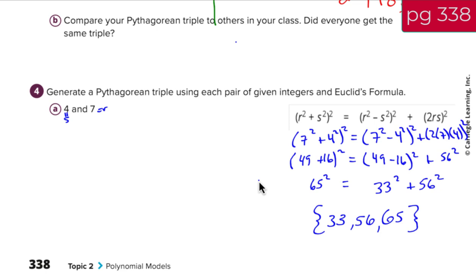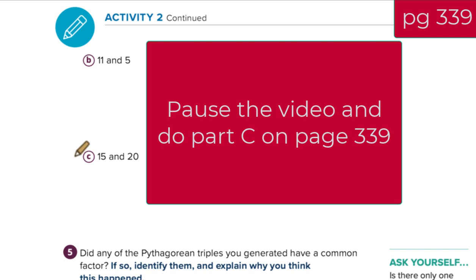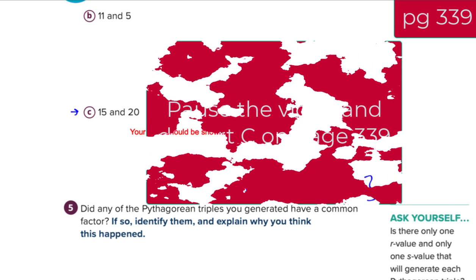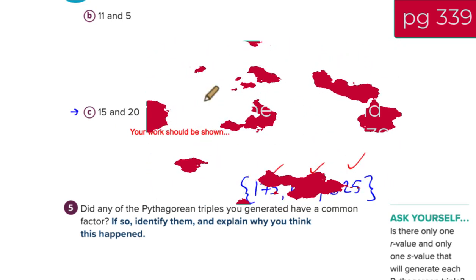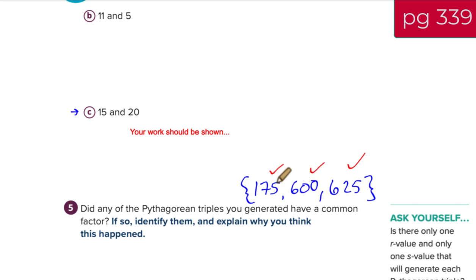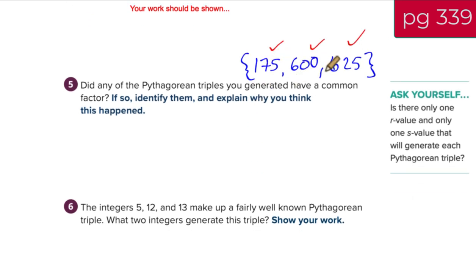One last one, you're going to do it all by yourself. Page 366, I lied, page 339, you're going to do part C. Do part C, do 15 and 20 all by yourself, and see what you get. Okay, so here's what I got. 175, boom, 600 and 625. Your work should be here, and you should get that answer. If you don't get that answer, please check in with your teacher, put up that red cup, so we know that you have a question. So make sure you get 175, 600 and 625.